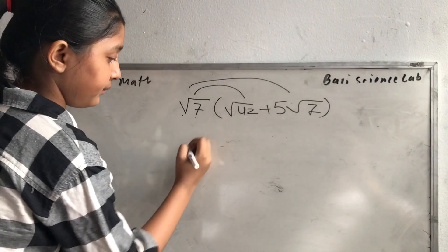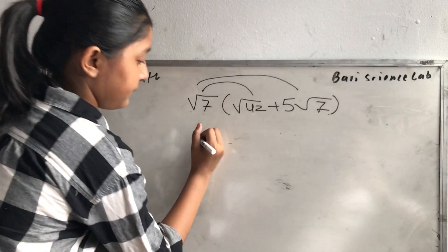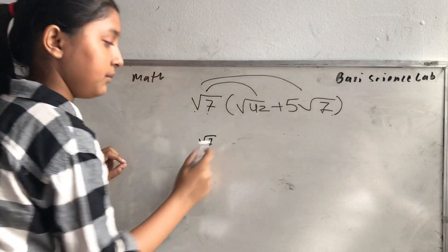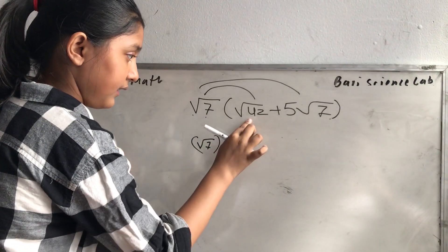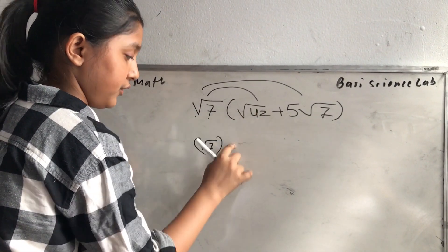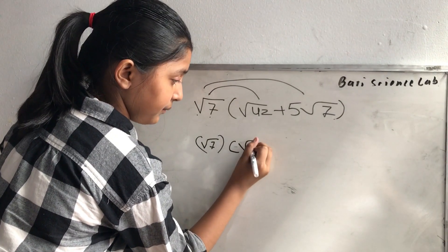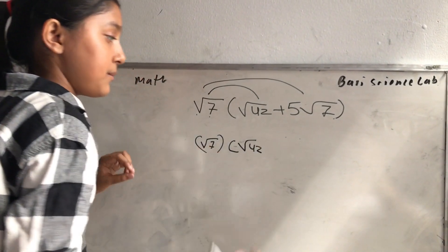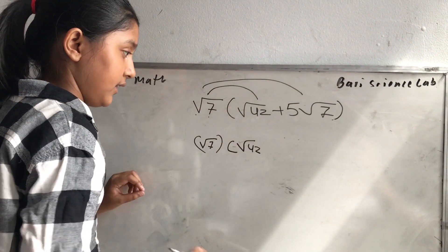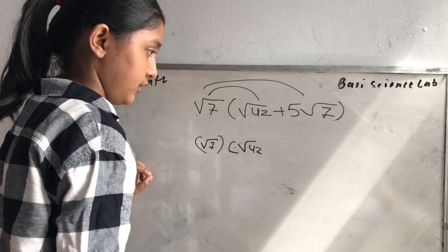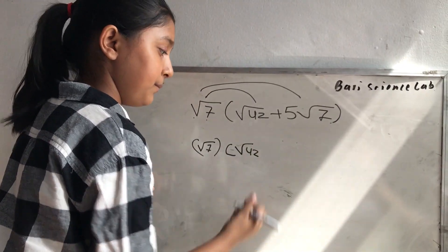So then you have to do root 7 in parentheses. Then you have to bring root 42 down with parentheses. There is a pattern. So first you have to do root 7, root 42 plus root 7 and then 5 root 7.